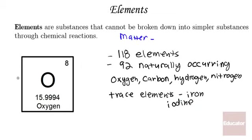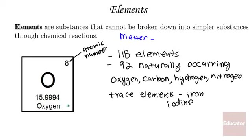Looking at the example of oxygen on the periodic table, you'll notice a couple of numbers. The first is the atomic number. I just want to give you an idea of how to read the periodic table of elements. O is the symbol for oxygen, here's the full name, and then down here is the atomic mass.